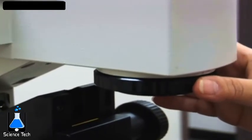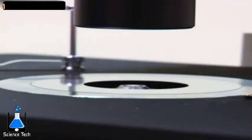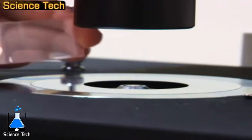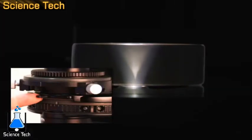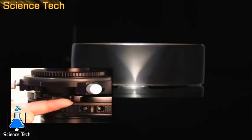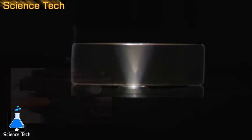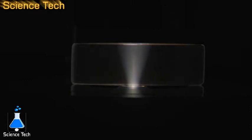The field diaphragm controls the area of the specimen to be illuminated. Next is the condenser, which focuses bright, uniform light on the specimen. The cone of illumination around the specimen is controlled by the condenser and must be adjusted depending on the objective that's used.